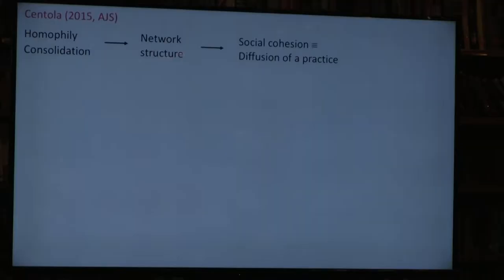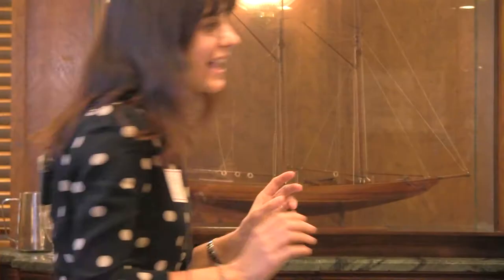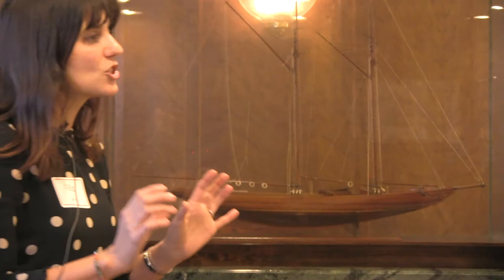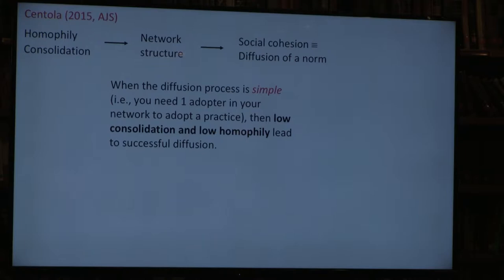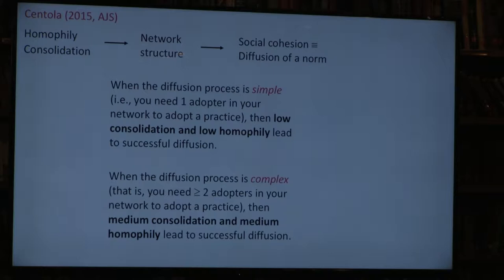Santola's main question was how this all affects diffusion of a common practice—his operational definition for social cohesion. He gave agents rules for adopting this practice: in one scenario, a single adopter in your network was enough for you to adopt in the next time period; in another, the threshold was higher—two or three people needed to adopt. When the diffusion process is simple—only one adopter required—low consolidation and low homophily lead to successful diffusion, entirely in line with Blau and Schwartz. But when diffusion is complex—requiring at least two people in your network—medium consolidation and medium homophily lead to successful diffusion outcomes.